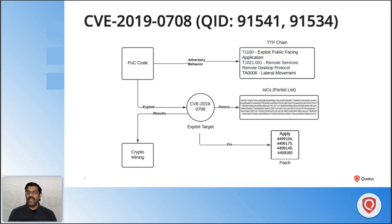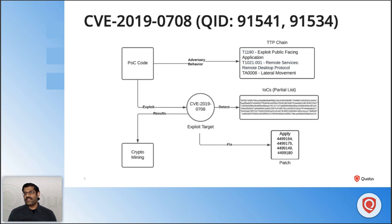CVE-2019-0708, dubbed BlueKeep, exists within the Remote Desktop Protocol in Microsoft. An unauthenticated adversary connecting via RDP can send a specifically crafted request to perform remote code execution, then do privilege escalation and gain access to the target machine. This is very similar to the SMB vulnerability exploited by WannaCry. The POC exploit code was available within the first 24 hours of release and was confirmed successful by security researchers.